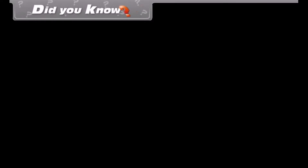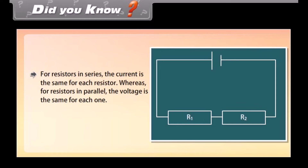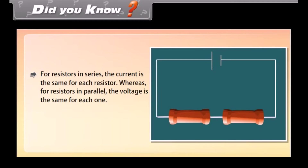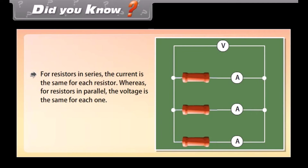Did you know? For resistors in series, the current is the same for each resistor, whereas for resistors in parallel, the voltage is the same for each one.